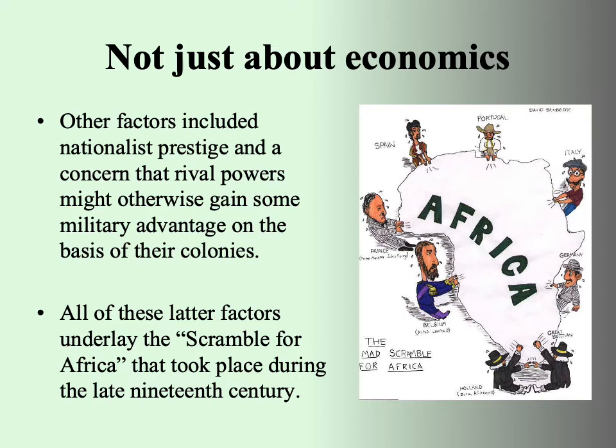European nations end up desiring to secure control of territories in order to protect these investments and economic interests — protecting them from other European powers. That's where nationalism really enters the picture. It's becoming very competitive, and by the end of the 19th century there's a growing perception that you simply can't call yourself a great power unless you have colonies. In some cases, populations are putting pressure on their governments through the media and newspaper editorials to actually acquire colonies, to build up colonial empires. Britain is increasingly seen as the model of what a great European power looks like, and a major part of that is having a colonial empire — a major factor underlying the scramble for Africa in the late 19th century.